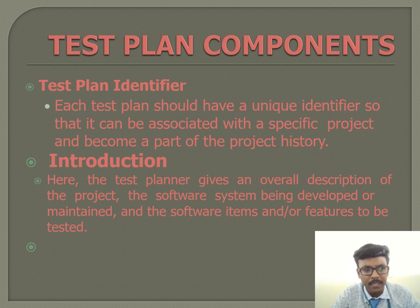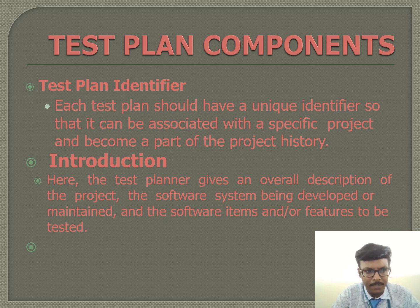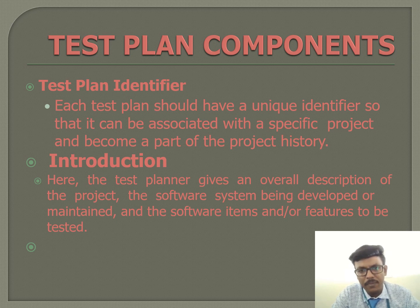We will take the reference from IEEE standard 829-1983 and go through the components one by one. The first is the test plan identifier — each test plan should have a unique identifier so that it can be associated with the specific project and become part of the project history. Organizational standards should describe the format for the test plan identifier, how to specify it, and the versions as well.